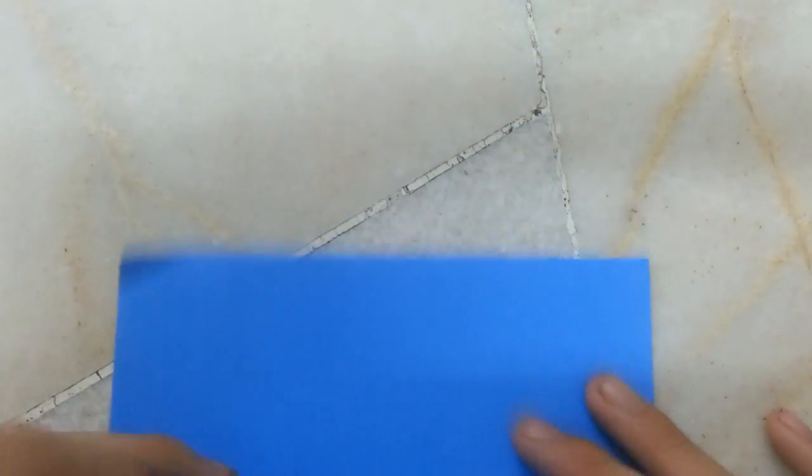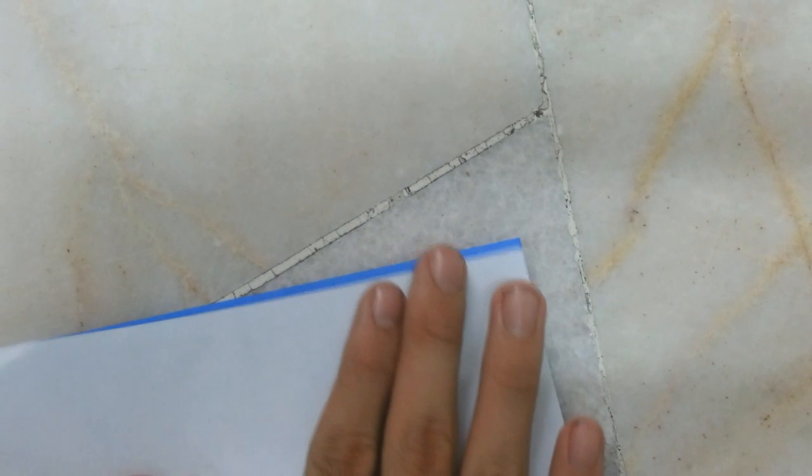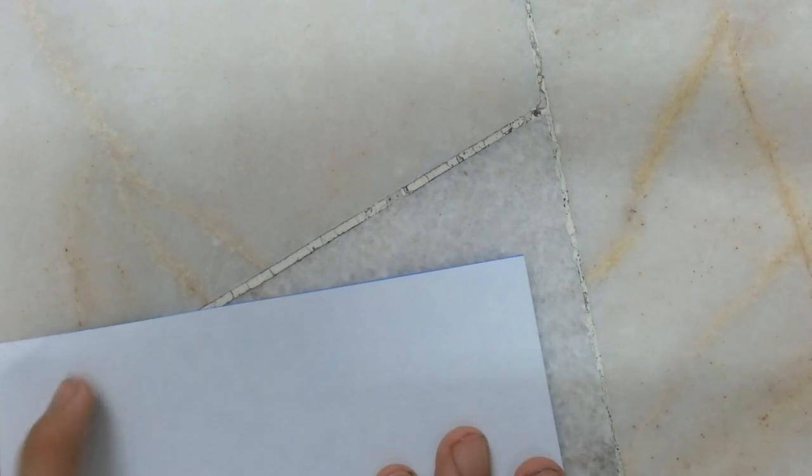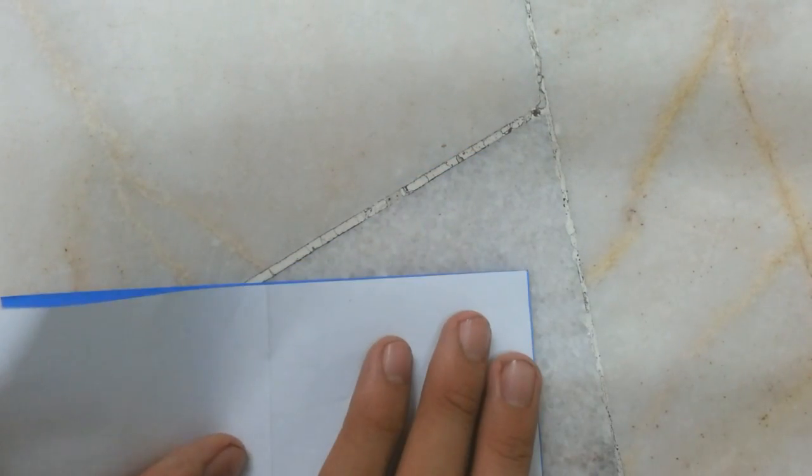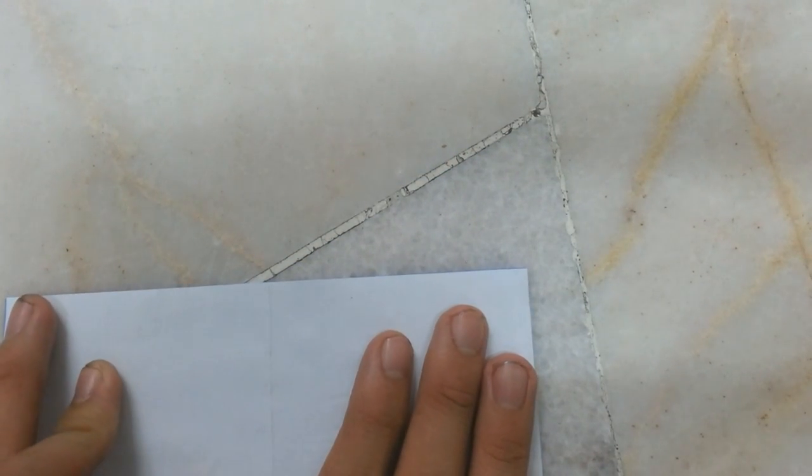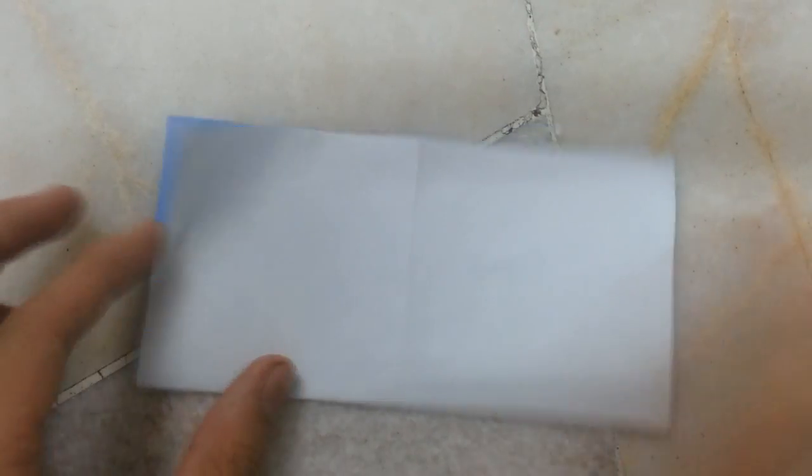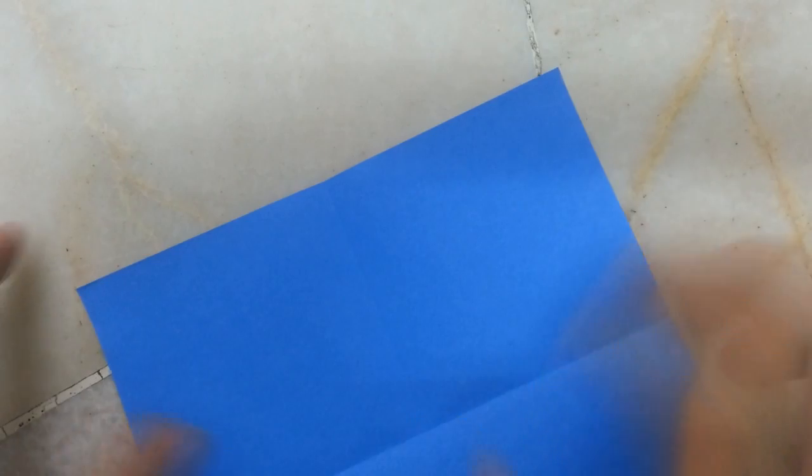So you start, first you fold in half, then on the other side. Unfold, then turn it over.